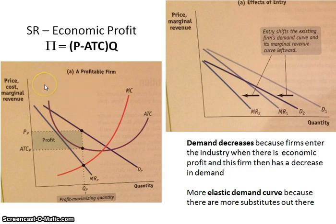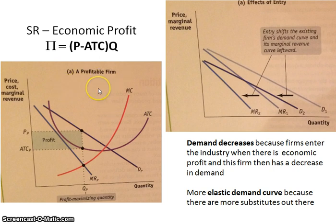In the short run, firms either have economic profit or they're suffering a loss. And in this case, they have economic profit.